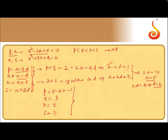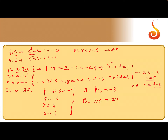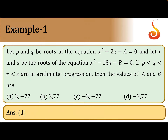Now we calculate the values of a and b. The value a is the product of p and q, which equals (-1)(3) = -3. And b is the product of r and s, which equals 7 × 11 = 77. So the answer is a = -3, b = 77.